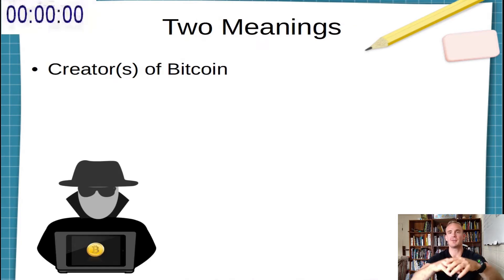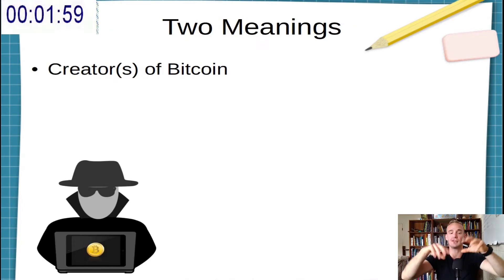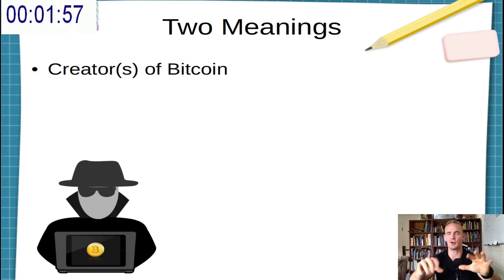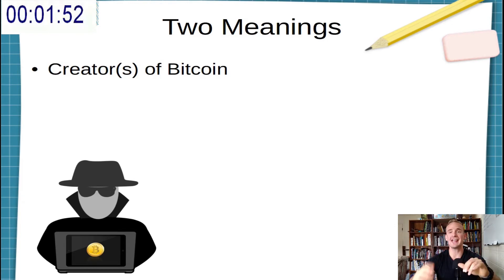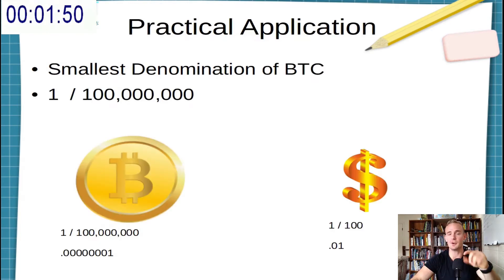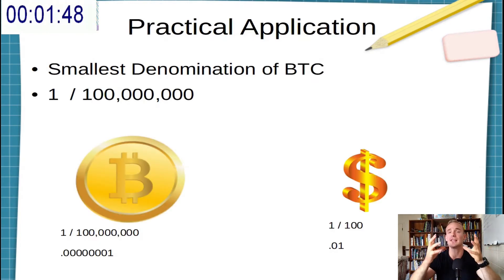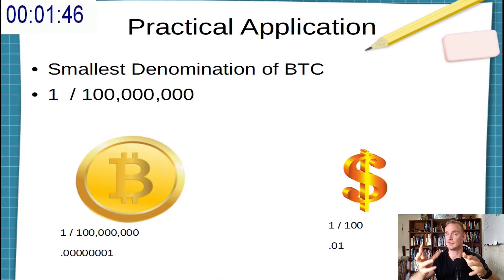A Satoshi can be thought of in two ways. The first is the mysterious Satoshi Nakamoto, the founder of Bitcoin — whether it's a man, a woman, a group of people, who really knows? But that is not the point of today's video. In today's video, we're talking about the practical application of the term.